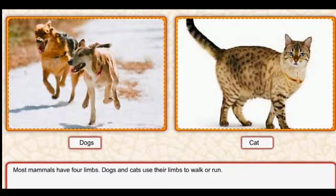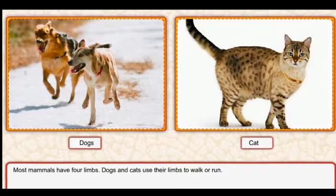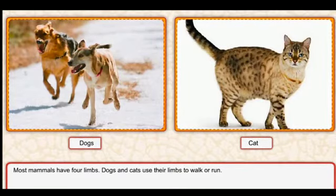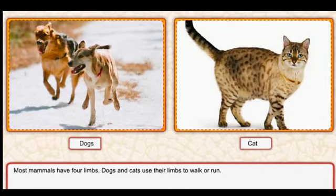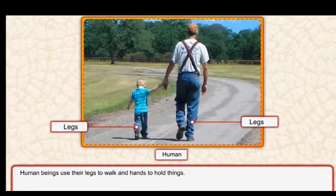Most mammals have four limbs. Dogs and cats use their four limbs to walk or run - jo dogs aur cats hoti hain woh apne four limbs ko istemal karti hain chalne ke liye ya phir daudne ke liye. Run mean daudna, walk mean chalna.